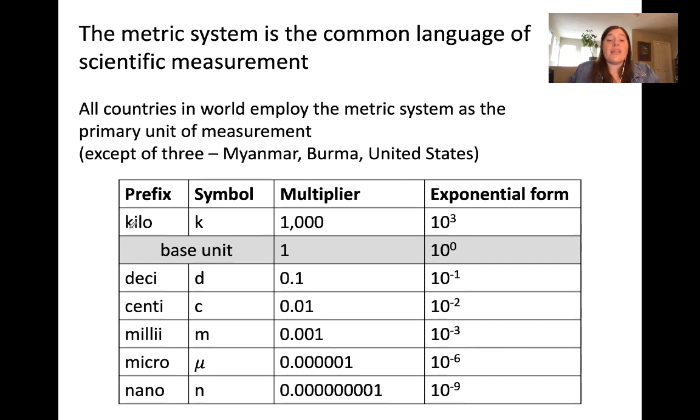These six prefixes are kilo, symbol K, deci, symbol D, centi, symbol C, milli, symbol M, micro, symbol mu, which is a Greek letter, and nano, symbol N. They have different multipliers and exponential forms which will be discussed in the following examples.